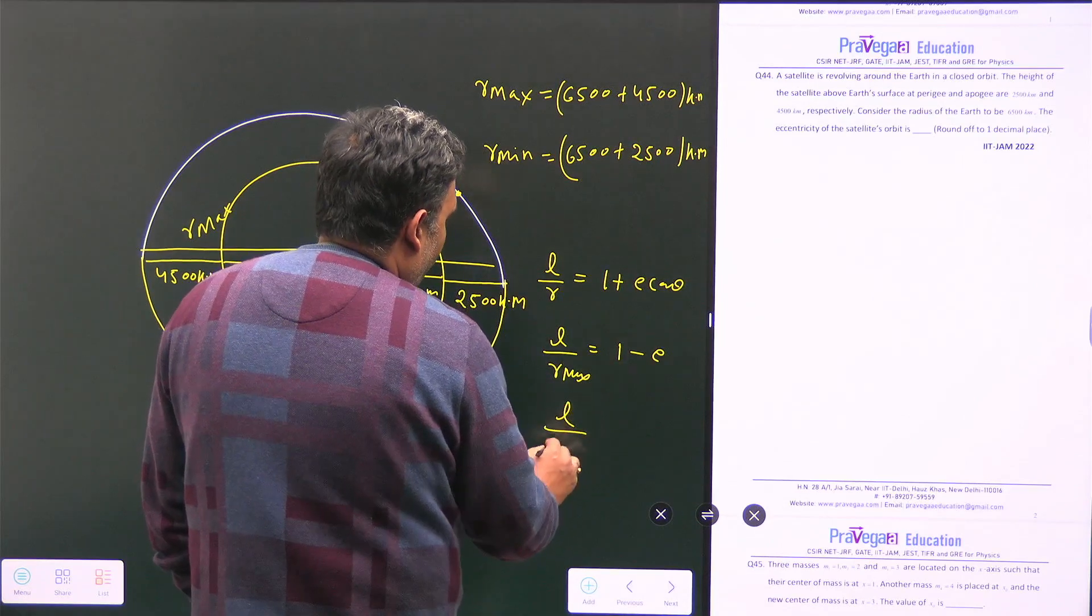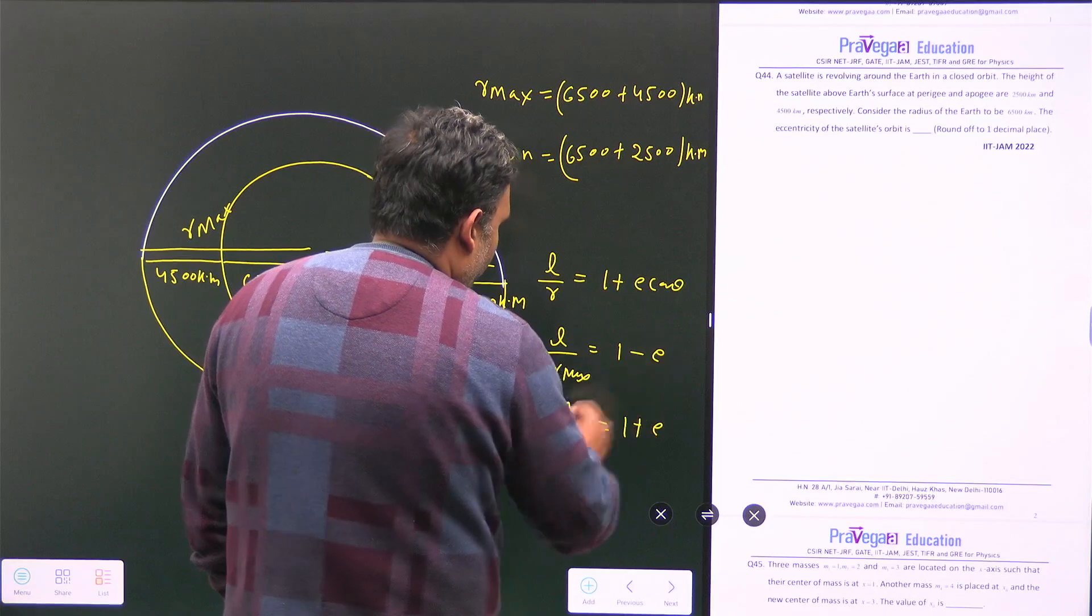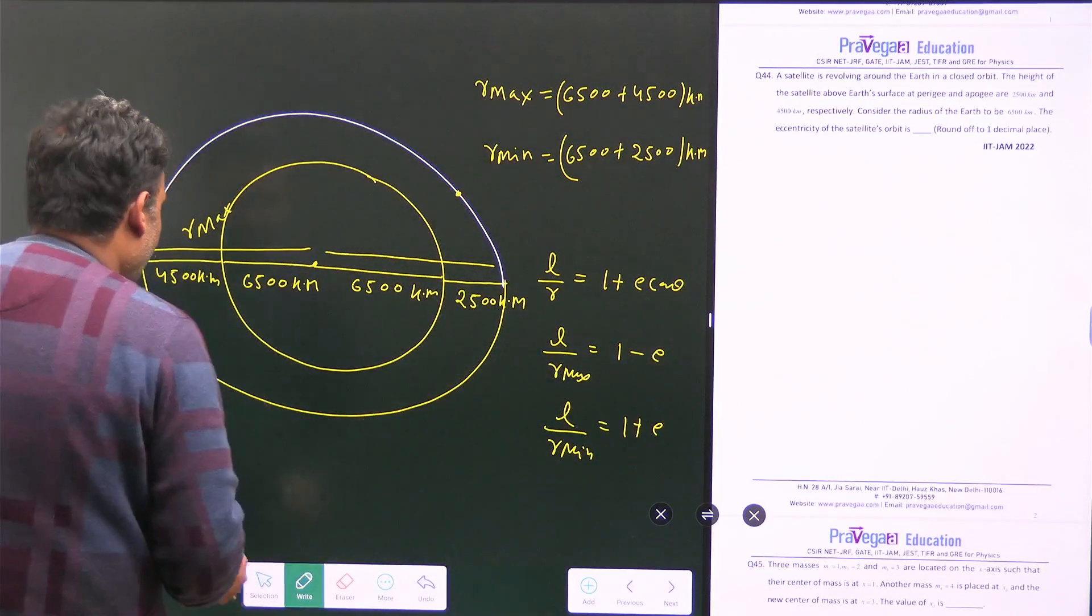So that value is minus. And we have l upon r minimum, that means 1 plus e. And from there, we can find the eccentricity.